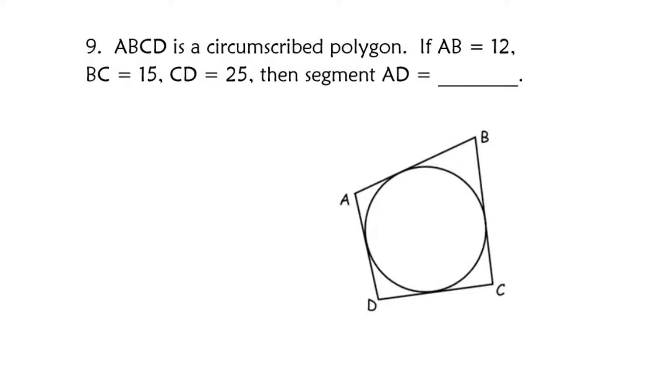So we're given basic information that says AB is 12, we know BC is 15, and CD is 25. I want to know what is the length here of AD.